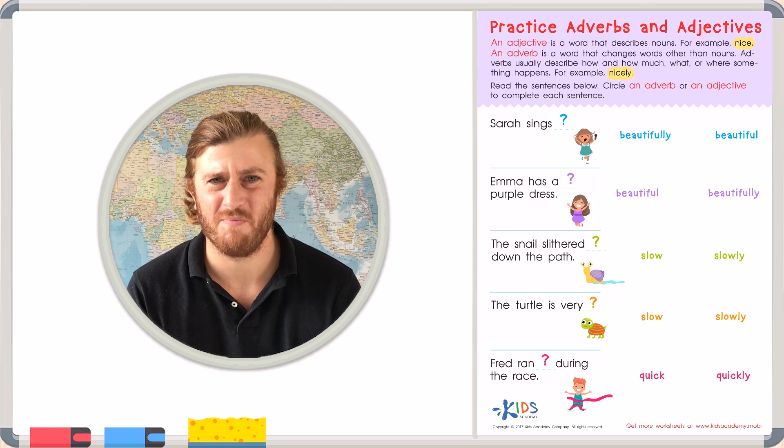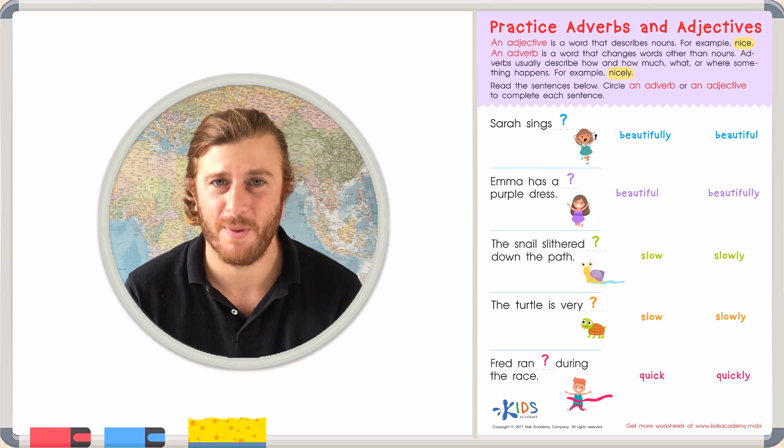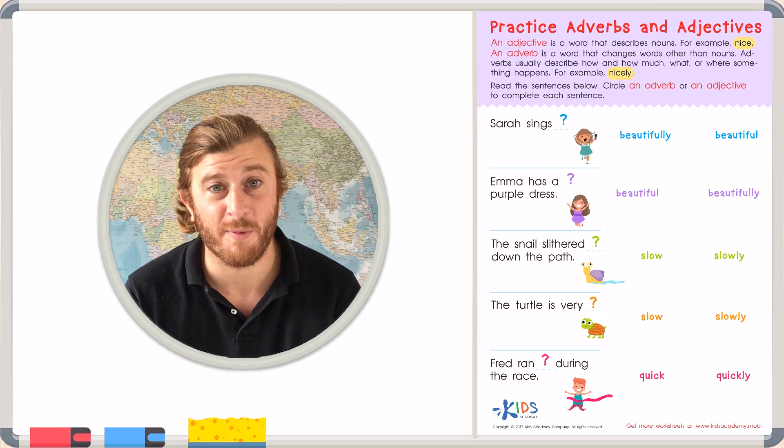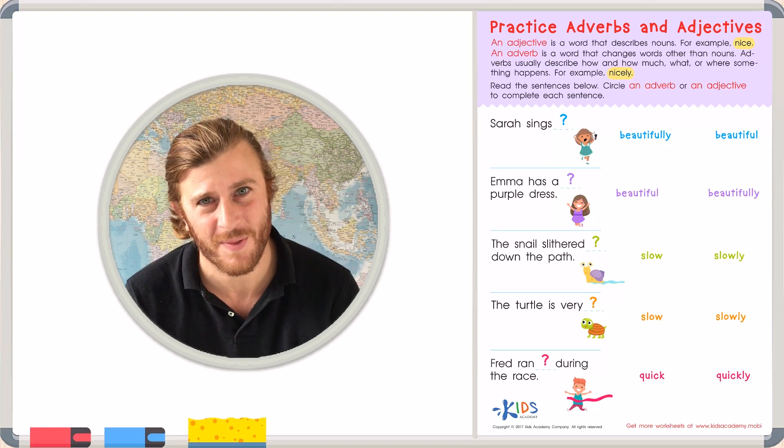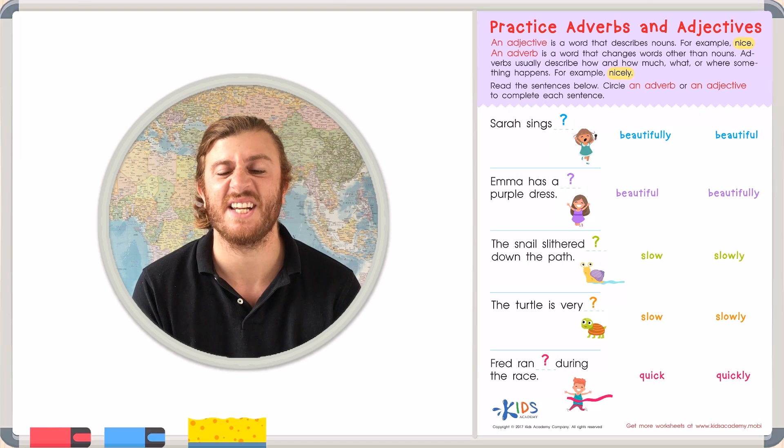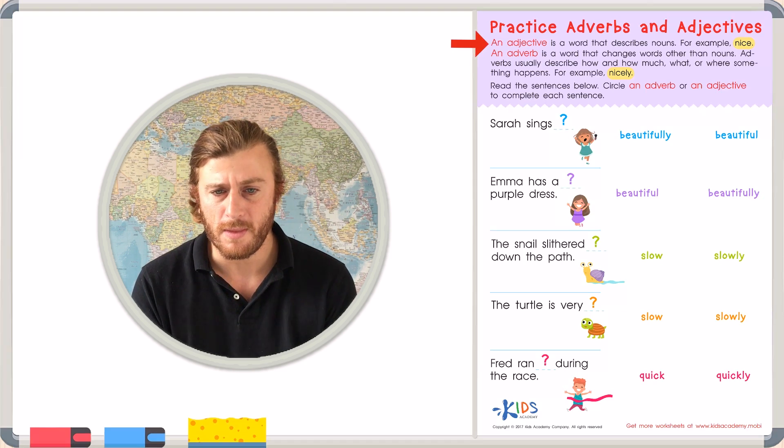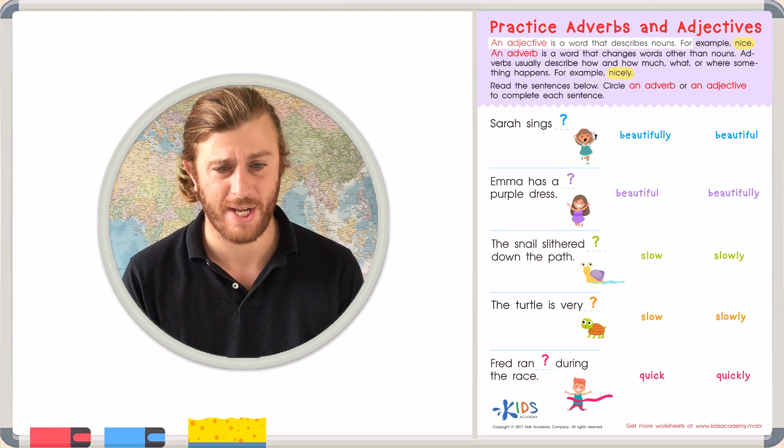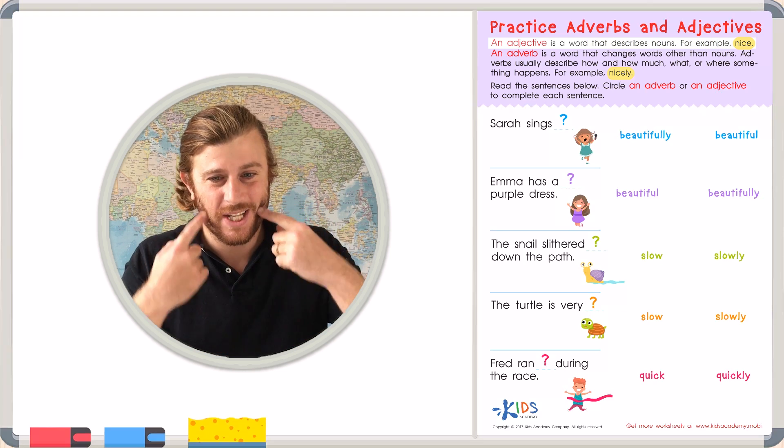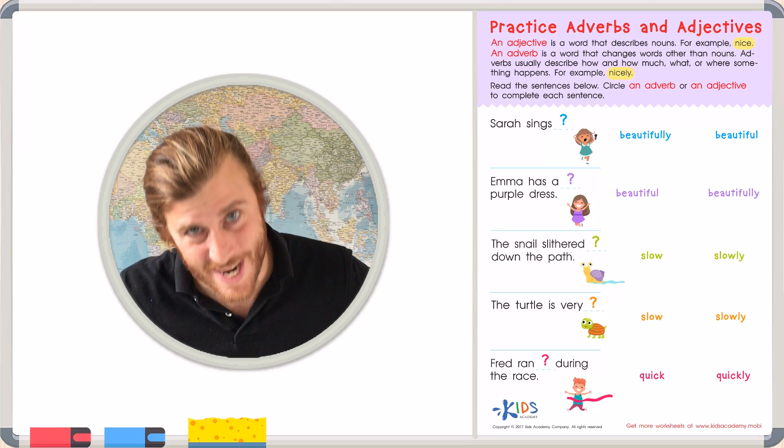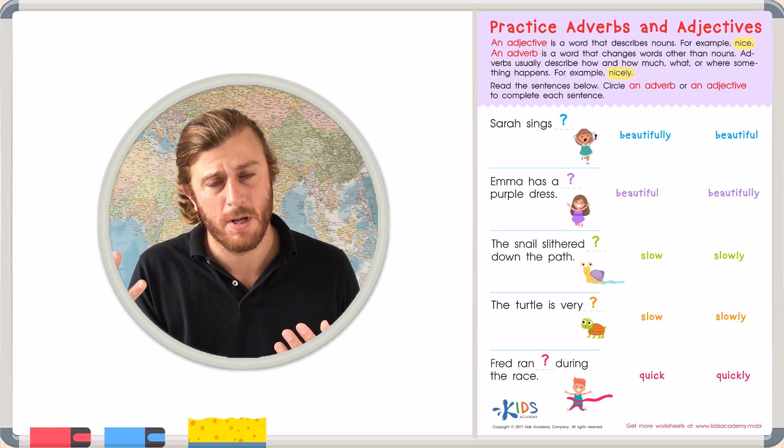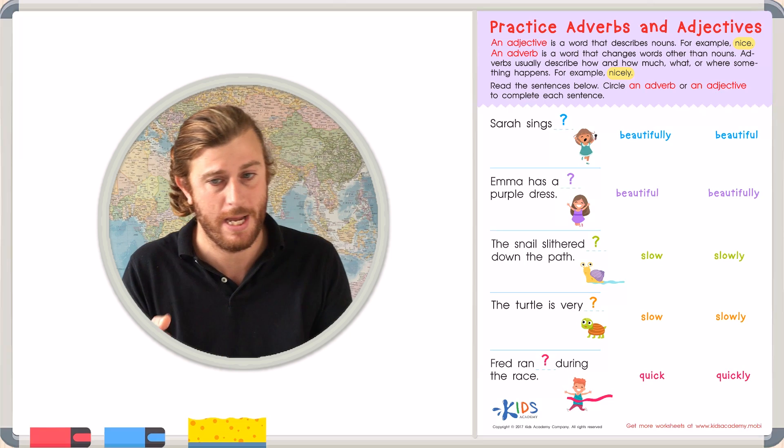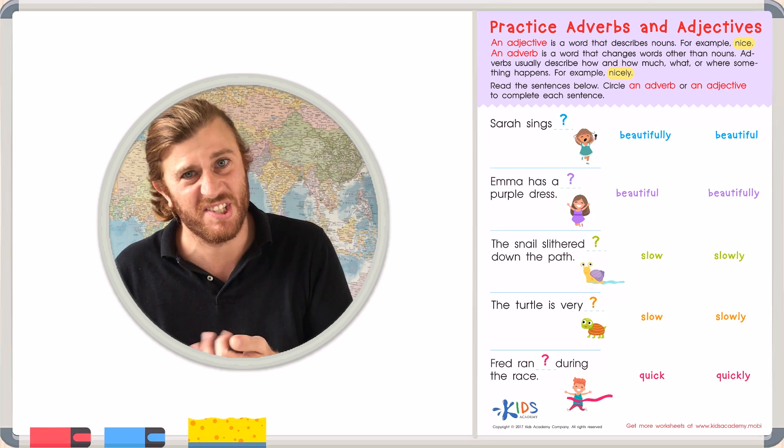These two word types do similar things, but they're used in different situations. Let's read the information up top on this worksheet and the directions beneath it and let's get started. An adjective is a word that describes nouns. For example, nice. The girl is nice. Nice describes the noun. The noun is the girl. The girl is nice. Nice is the adjective.